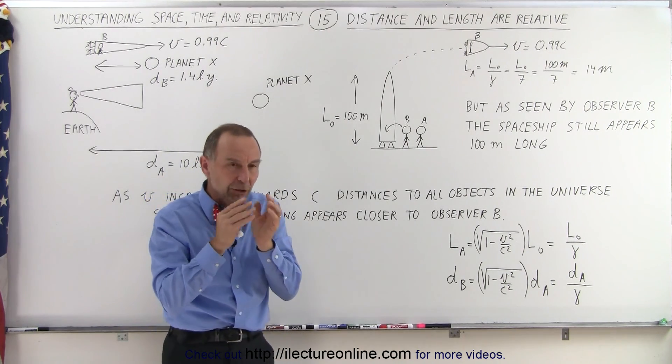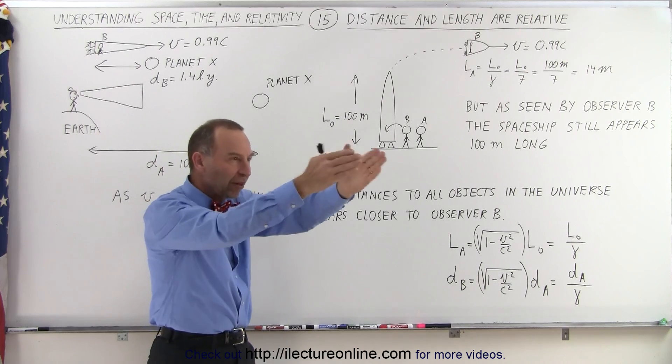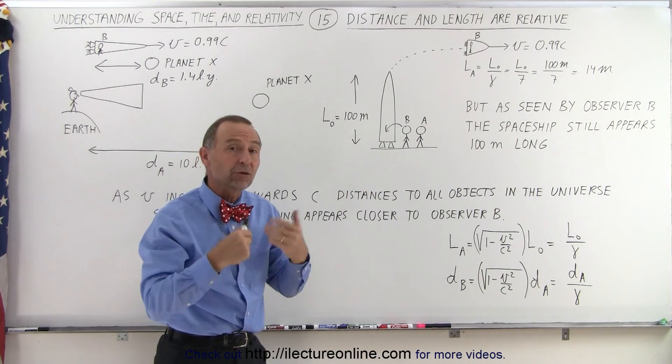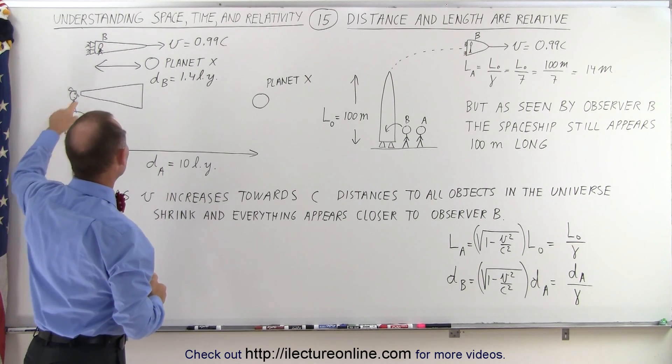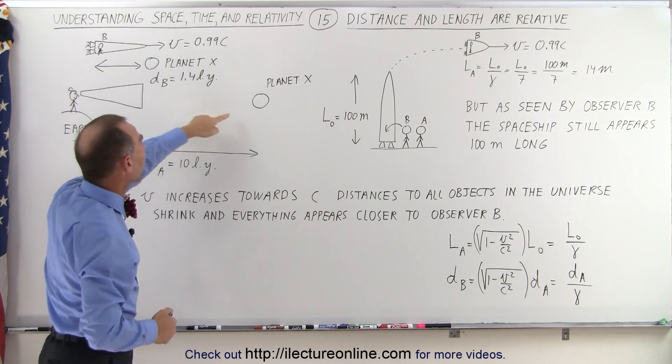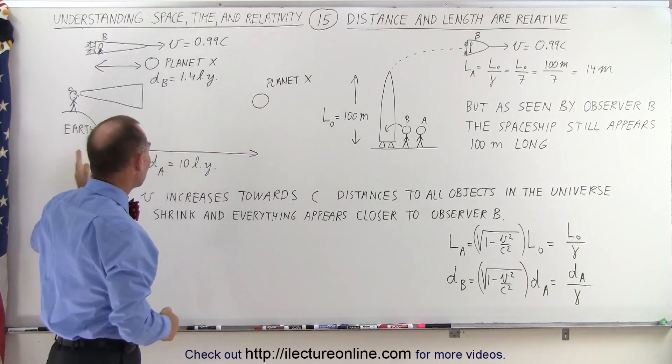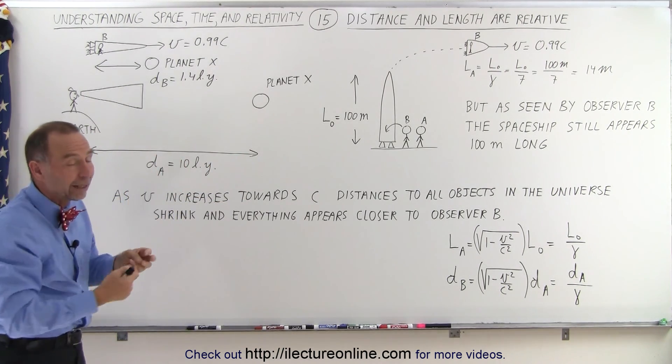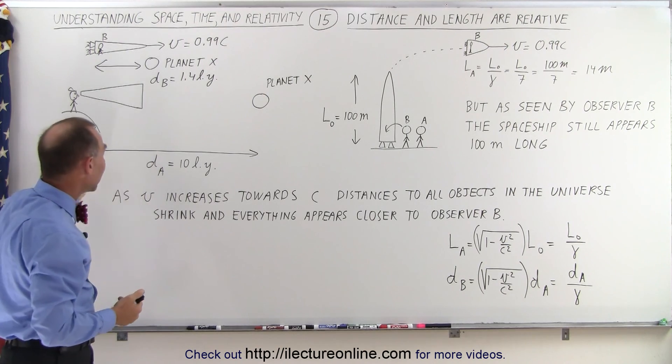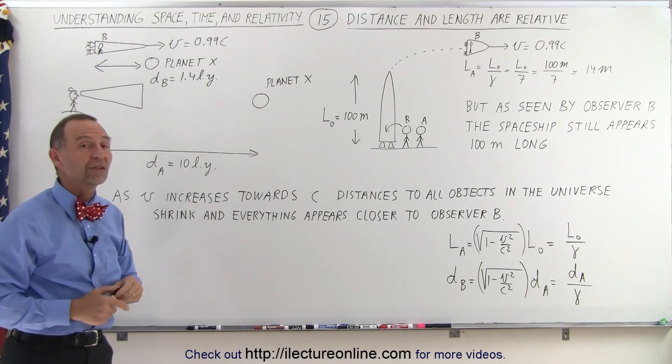But then when Observer B looks out the window and sees what they're trying to reach, then things change. For example, let's say that the Observer is trying to make it to a planet, Planet X, which is 10 light years away. So, at the speed of 0.99c, or closest to the speed of light, it would take about 10 years for the spaceship to reach that planet.